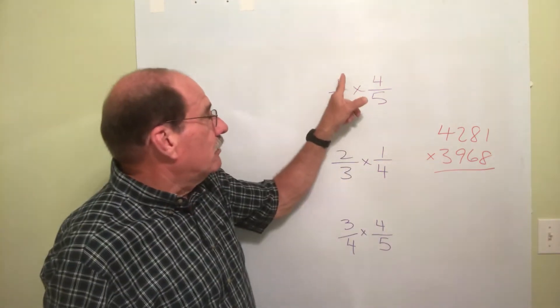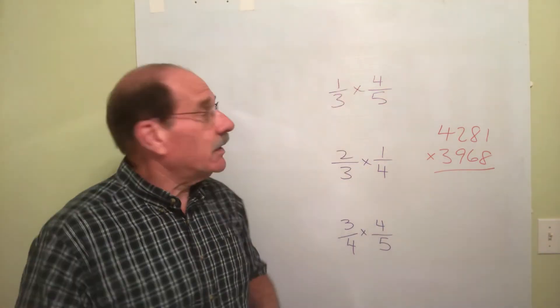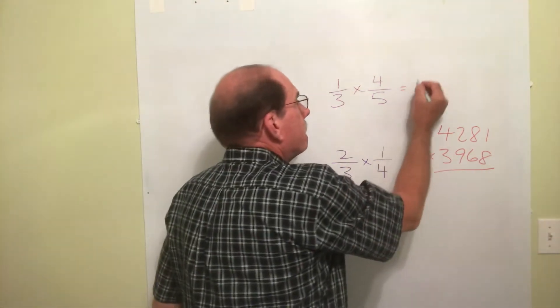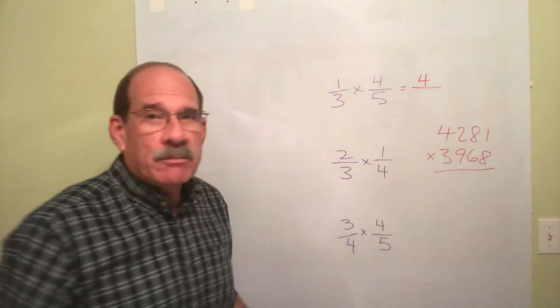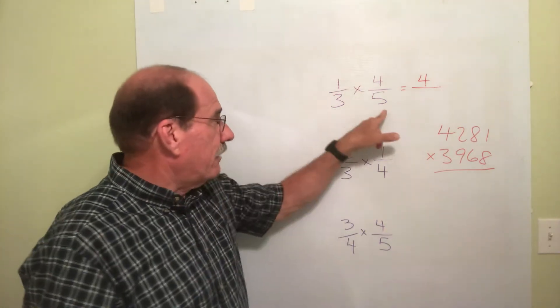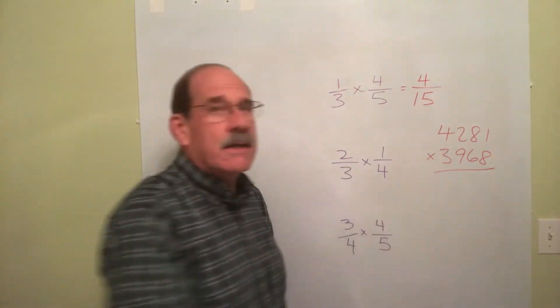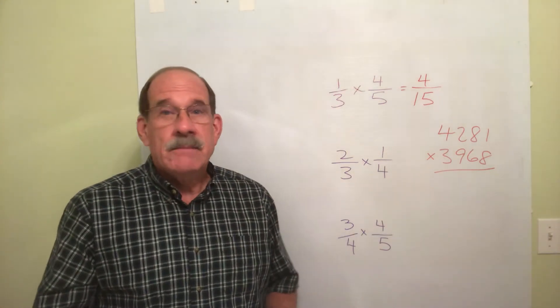That eliminates that entire step. All you have to do is multiply the two top numbers. Well, let's see, 1 times 4 is 4. And multiply the two bottom numbers. 3 times 5 is 15. Well, looky there, that's the answer. That's all you're doing.